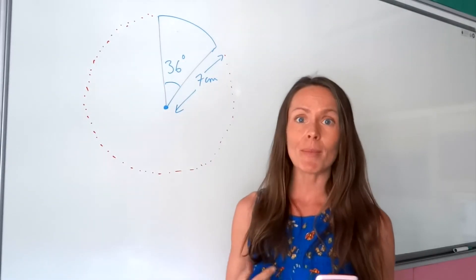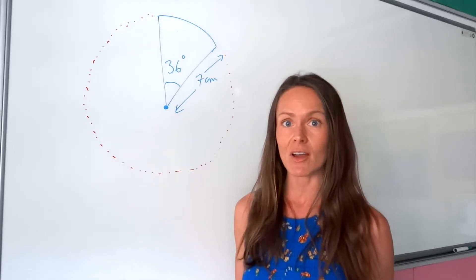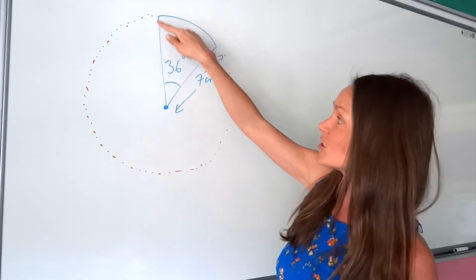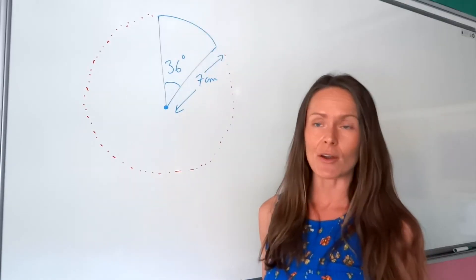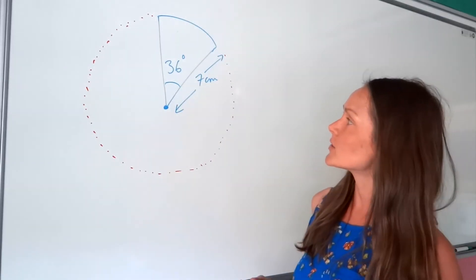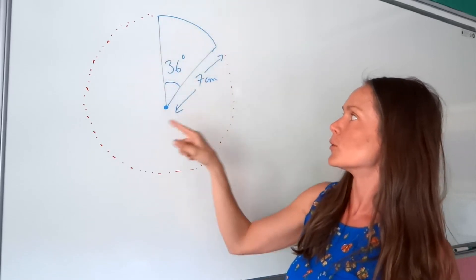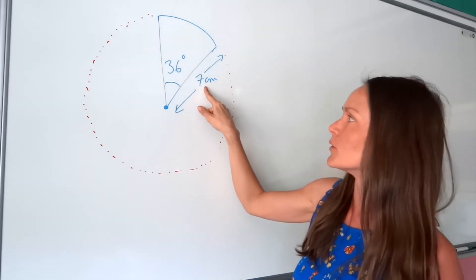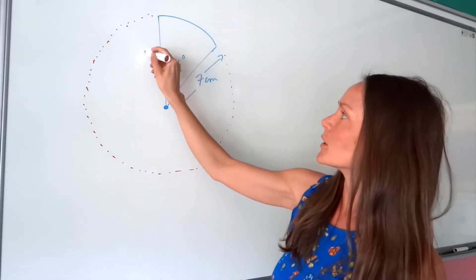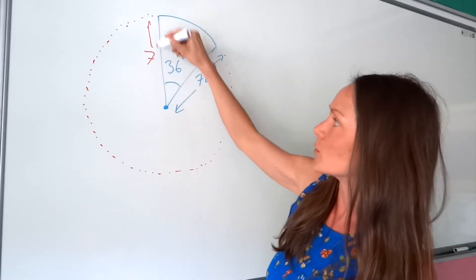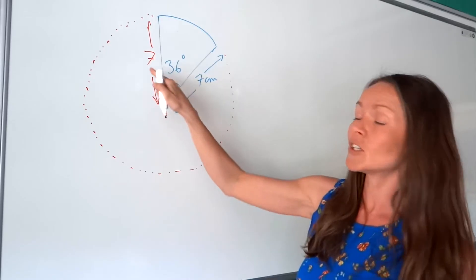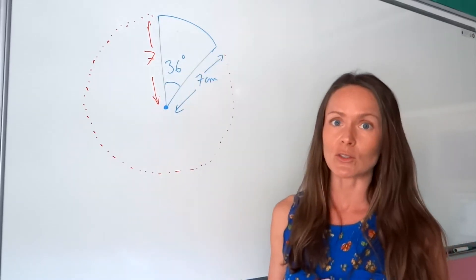So the perimeter, remember, is the distance around the outside of the shape. So it's basically just all of these sides added together. So we can see in this diagram that the radius of this sector, of what would be the circle, has been given to us here, it's 7. Which means this one over here is also 7. So we already know the length of two out of those three sides.